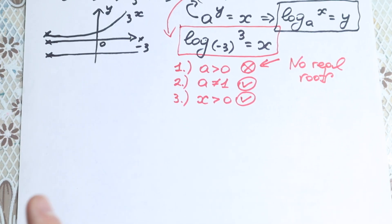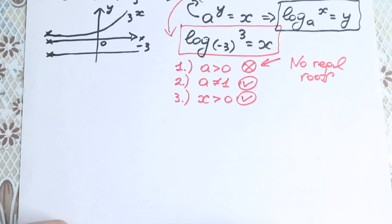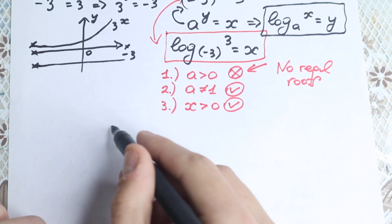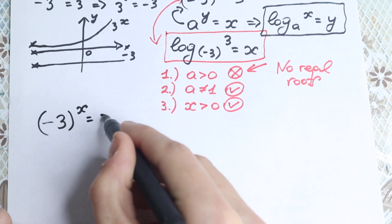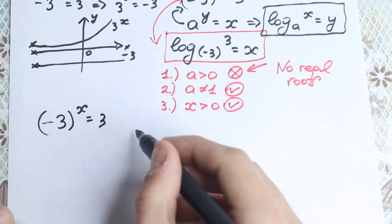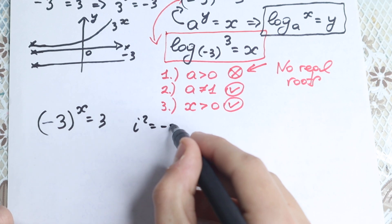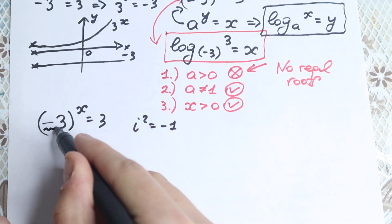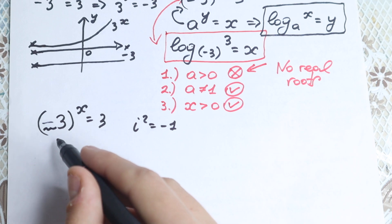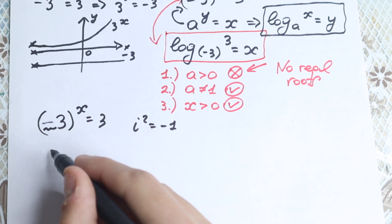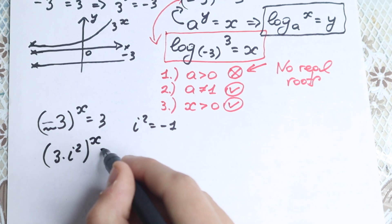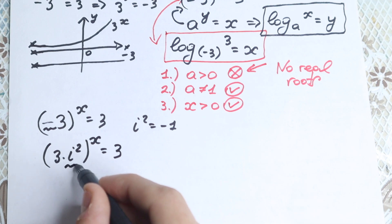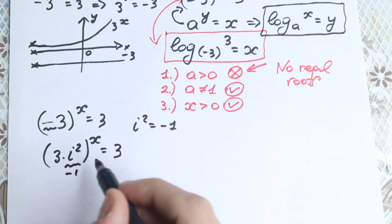I hope you will enjoy this step with complex roots. We have the equation: (minus 3) to the power x equals 3. We know from complex numbers that i squared equals minus 1. So we can rewrite minus 3 as 3 times i squared, giving us (3·i²) all raised to the power x equals 3.